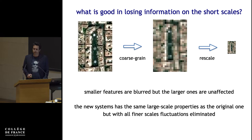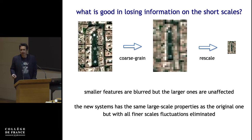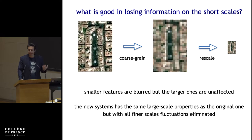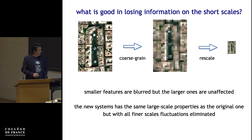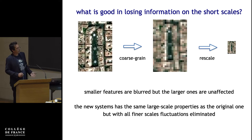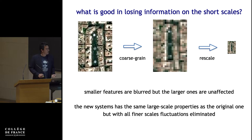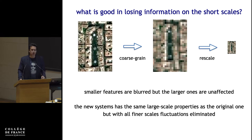So what is good about losing information on the short scale? Well, the smaller features are blurred, but the largest ones are unaffected. The new system has the same large-scale properties as the original one, but with all finer-scale fluctuations eliminated. These are more or less the words of Wilson in his paper. But your question could be: I understand I have a new system which is the same on the larger scale — so why did I do that? You lost information and have the same physical larger scale — why?